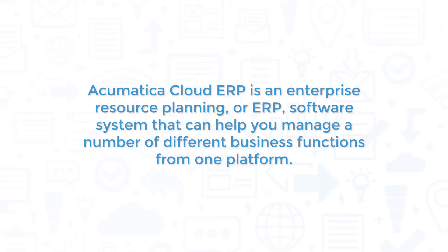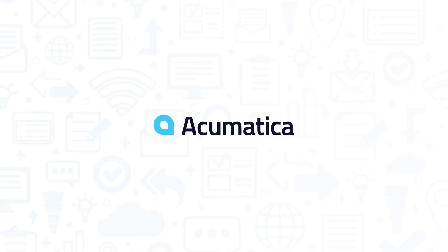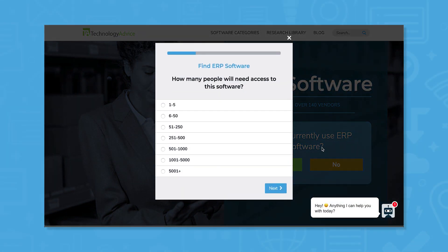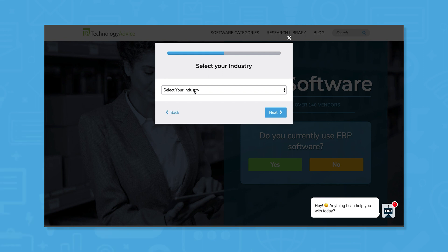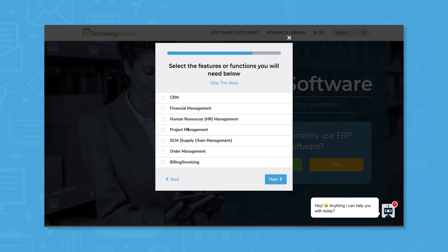Acumatica Cloud ERP is an Enterprise Resource Planning, or ERP, software system that can help you manage a number of different business functions from one platform. If you're in the market for an ERP system, you'll want to consider Acumatica. Use our product selection tool at TechnologyAdvice.com to get a free list of ERP software recommendations. Click the link in the description below to get started.